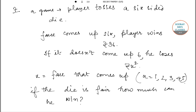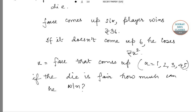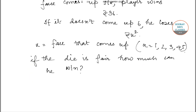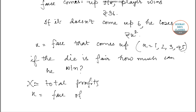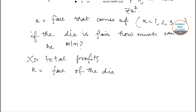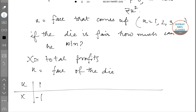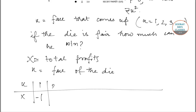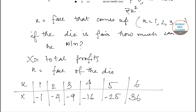We are also given four options, but first we will do the calculations and then check the options. Let X be the total profit and k be the face of the die. Making a table: for k equals one, X equals minus one; for k equals two, X equals minus four; for k equals three, X equals minus nine; for k equals four, X equals minus sixteen; for k equals five, X equals minus twenty-five; and for k equals six, X equals plus thirty-six, because the person wins.